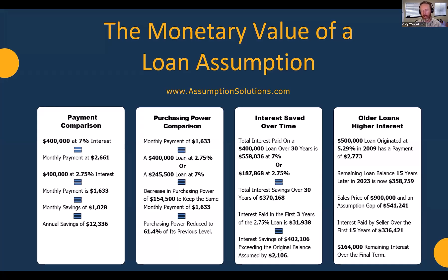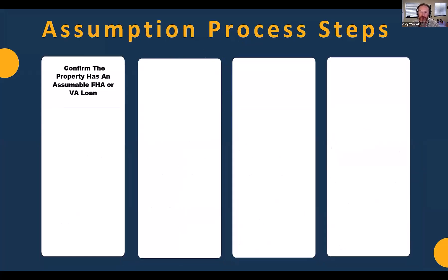These numbers are crucial for agents to understand and crucial to be able to communicate with potential clients — be they buyers or sellers when talking about this market. We're happy to share these out anytime. Let's get out of the numbers piece and talk about the assumption process steps — what it takes to get people through the process of an assumption.